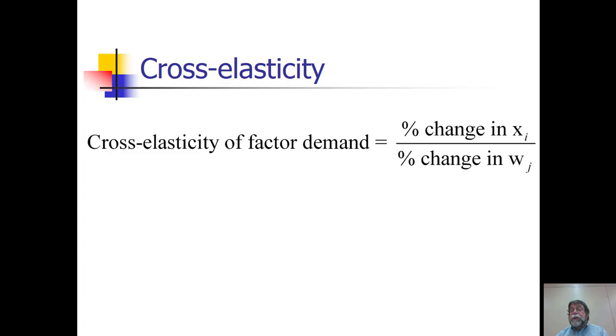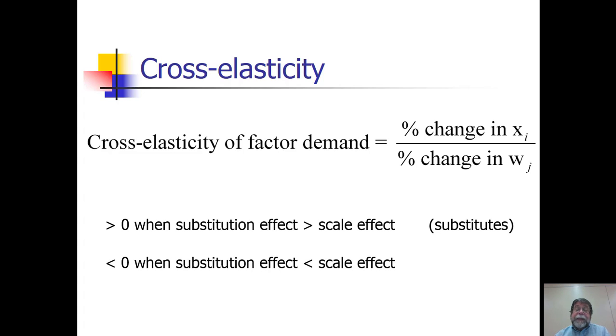This will be greater than zero if the substitution effect is larger than the scale effect, and when that occurs, we say the two inputs are substitutes, as we've talked about before. It'll be less than zero if the substitution effect is less than the scale effect, in which case the two inputs will be complements.